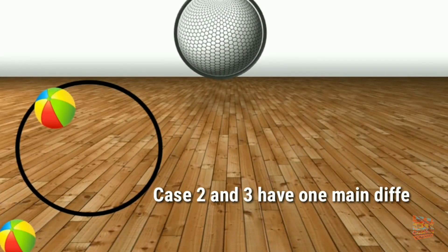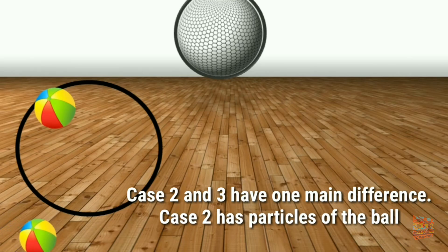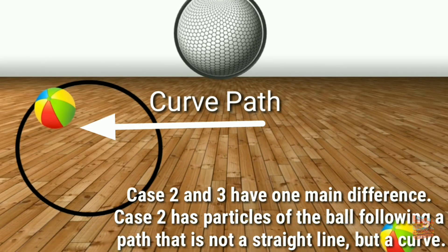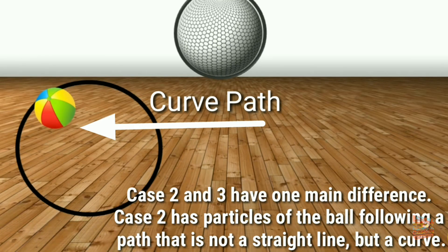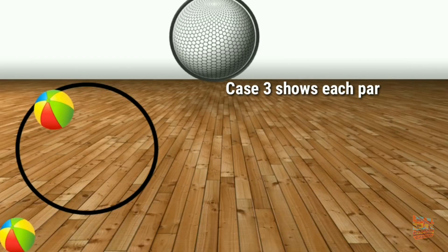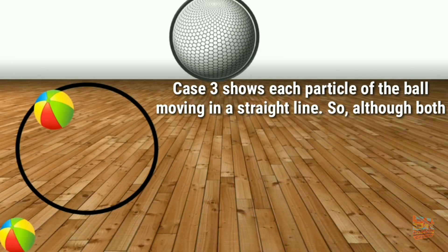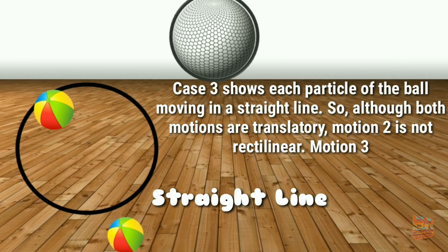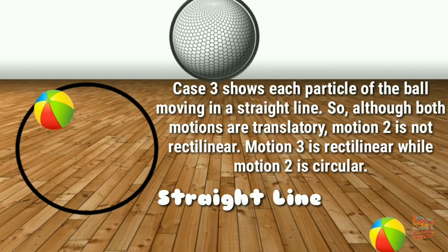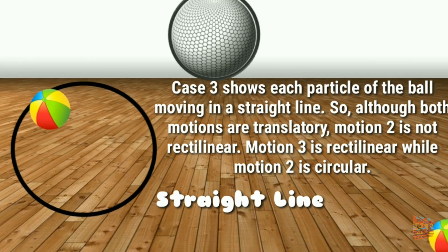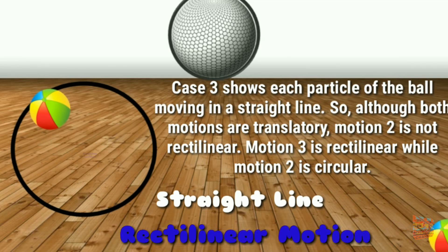Case 2 and 3 have one main difference. Case 2 has particles of the ball following a path that is not a straight line but a curve. Case 3 shows each particle of the ball moving in a straight line. So although both motions are translational, motion 2 is not rectilinear. Motion 3 is rectilinear while motion 2 is circular.